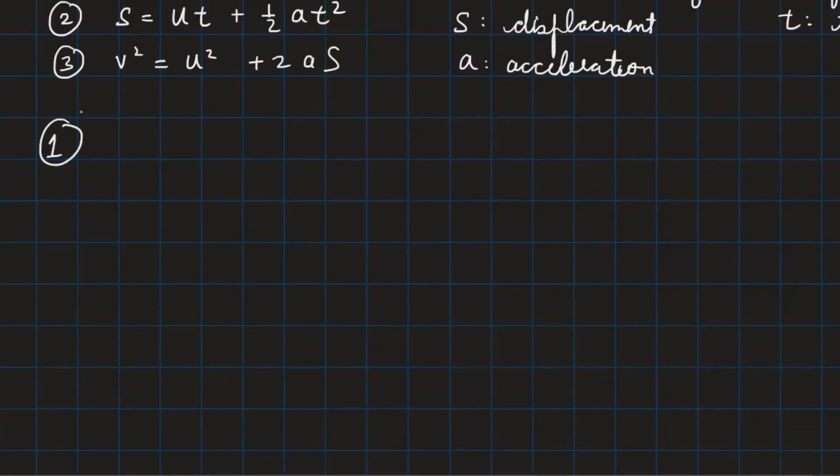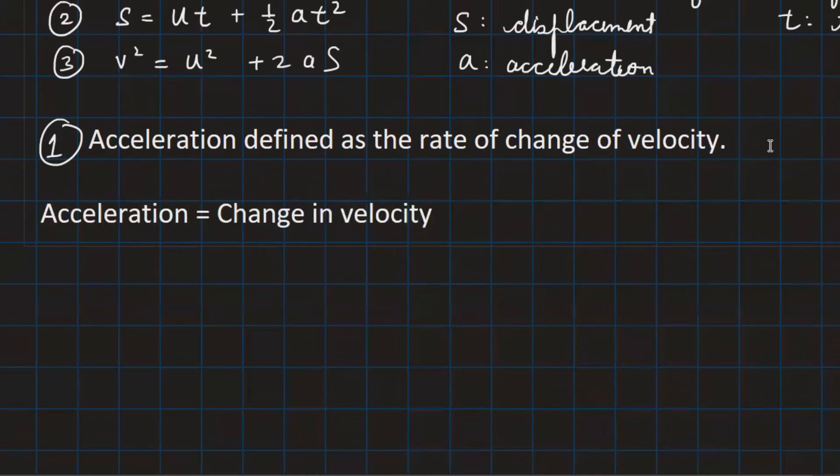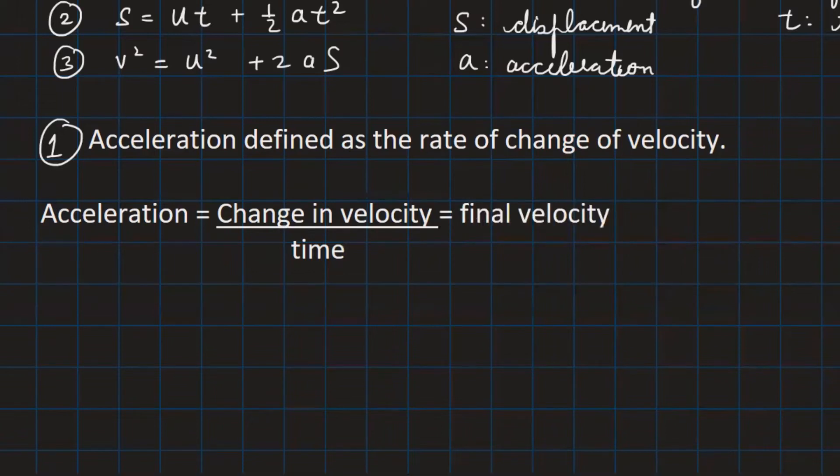Now for the first equation, what I'm going to write over here is the definition of acceleration. So acceleration is defined as the rate of change of velocity, which can be mathematically expressed as change in velocity upon time. Now this change in velocity is also written as final velocity minus initial velocity upon time.